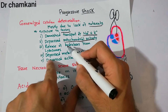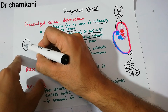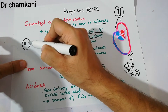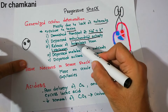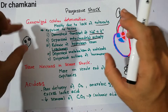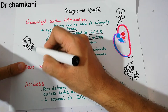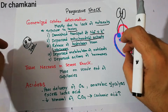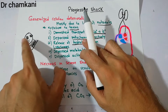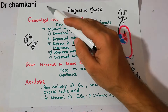Finally, there is release of hydrolases from the lysosomes. Inside the cell, lysosomes contain hydrolytic enzymes which normally help in digestion of nutrients. Due to shock — with diminished sodium-potassium transport, cell swelling, and decreased mitochondrial activity — these hydrolases are released from the lysosomes and start acting on normal cell components, further deteriorating cellular function.